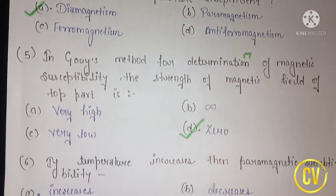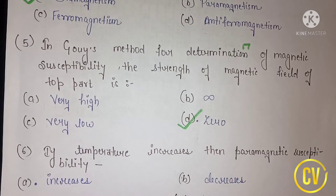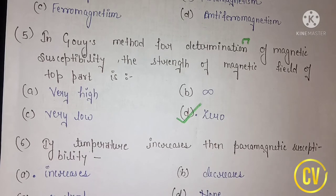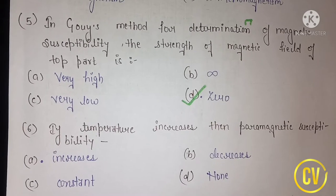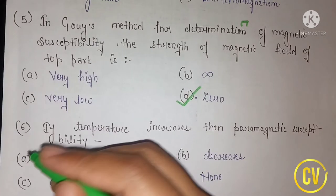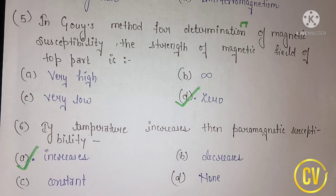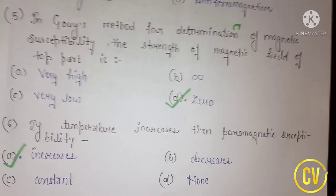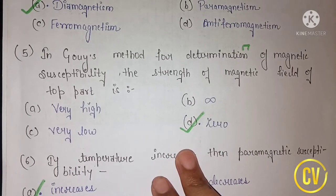The next question is: if temperature increases, then what happens to paramagnetic susceptibility? If temperature increases, then paramagnetic susceptibility will decrease.